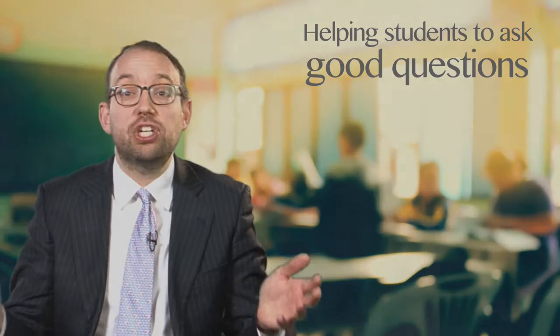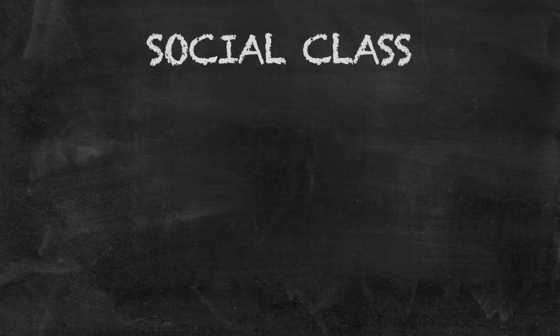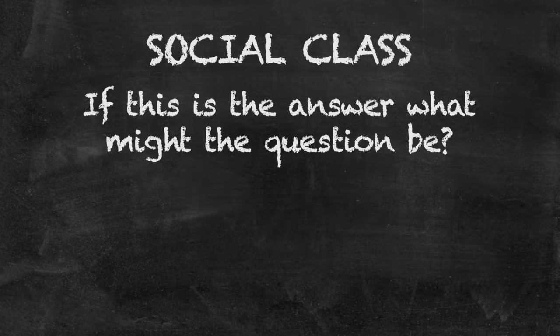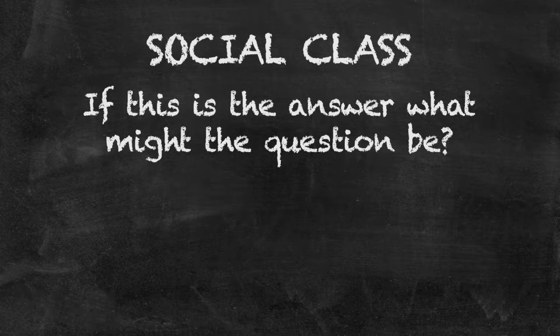For example, I might be teaching a Year 10 sociology lesson. I start the lesson by displaying 'social class' on the board and say to students: 'If this is the answer, what might the question be?' Students then have to think about how they could construct a question for which 'social class' might be the answer. I would encourage them to do that in pairs, discussing their ideas and coming up with a range of possible questions before settling on the one they think is best.